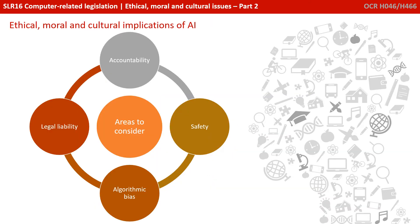There are clearly some ethical, moral and cultural implications of artificial intelligence, and these are some areas you might like to consider. Who's accountable? What safety is put in place? Is there any legal liability and who should be held responsible if an AI performs an unwanted action? And do AI algorithms have any algorithmic bias? We'll explain what we mean by that in a minute.